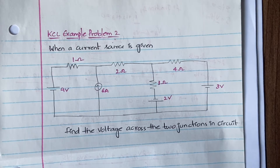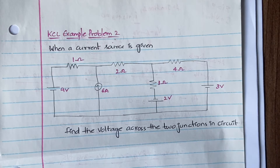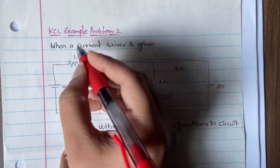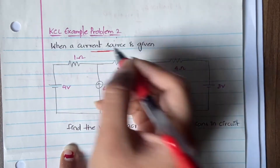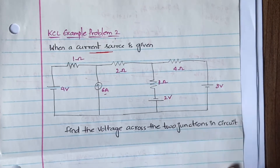I highly recommend you watch the KCL concept video and the second example video before this one, because I'm going to explain this problem with reference to that. This problem involves a current source — specifically a six-ampere current source is given in the circuit.